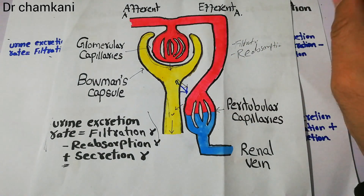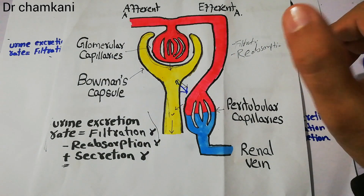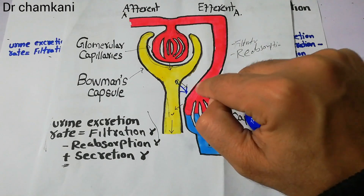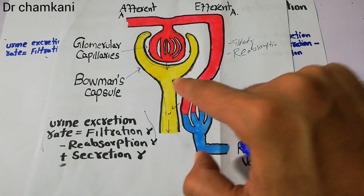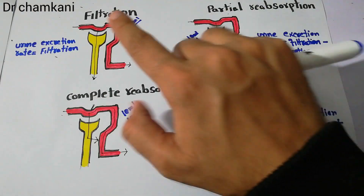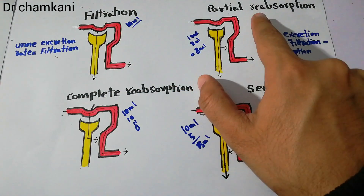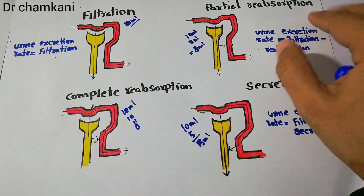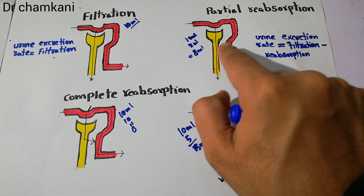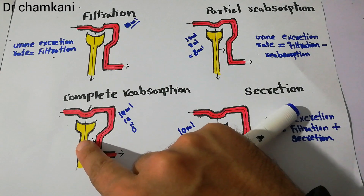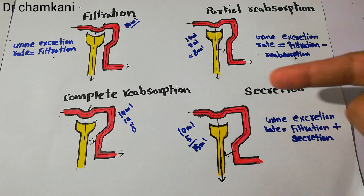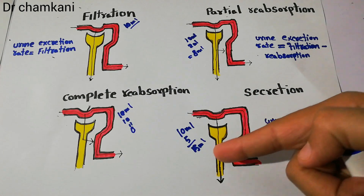Depending upon the type of substance — whether amino acids, glucose, sodium, potassium, or other electrolytes — some substances may be completely reabsorbed into the peritubular capillaries, some may not be reabsorbed at all, or some may be secreted from the peritubular capillary into the tubule. Filtration occurs at the Bowman's capsule. Reabsorption is when substances move from the tubule into the peritubular capillaries — either partially or completely. In secretion, the substance is not only filtered at the Bowman's capsule but also gets secreted from the peritubular capillaries into the tubule.